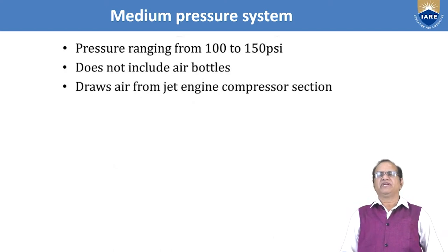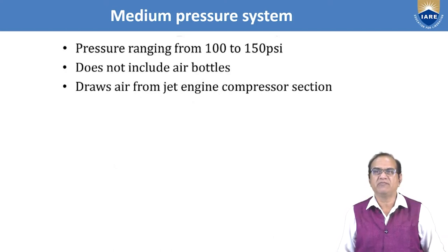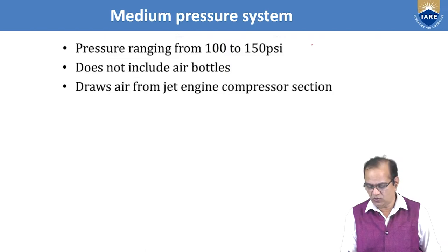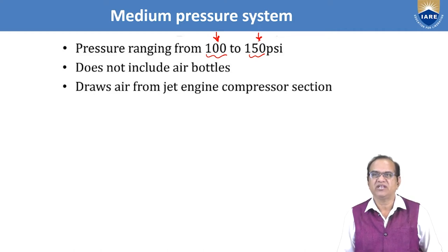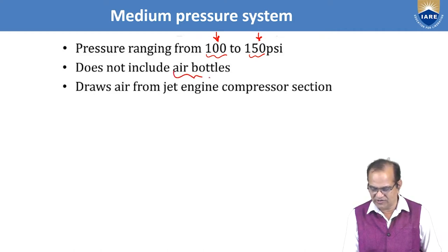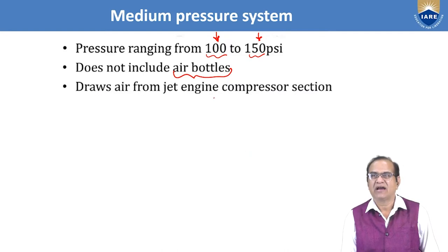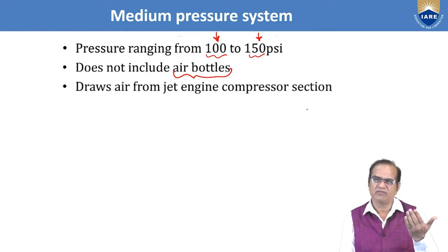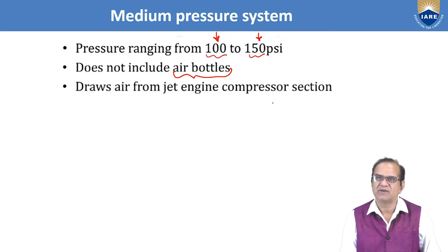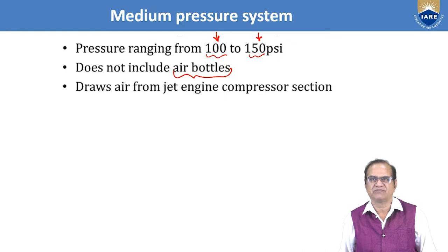The medium pressure system ranges from 100 to 150 psi. It does not include an air bottle. It draws air from the jet engine compressor section, so no separate compressing pumps are needed — air is taken directly from the engine compressor and supplied for the operation of the pneumatic systems.